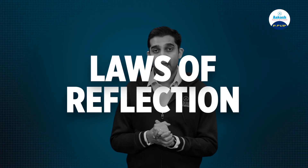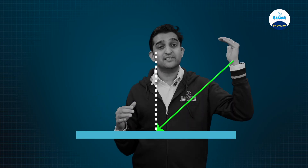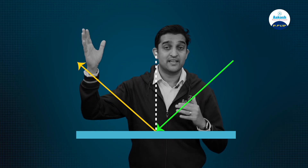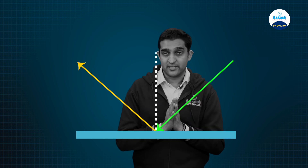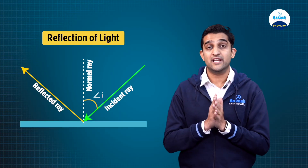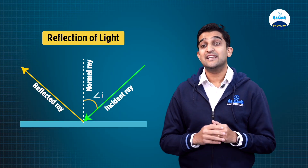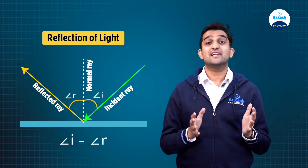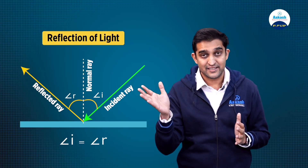The laws of reflection. Imagine a surface with a normal to it, and a ray of light coming in — this is called the incident ray. When an incident ray hits a surface, it reflects and goes back in the same medium. The law of reflection states that the angle of incidence, which is the angle between the incident ray and the normal, is equal to the angle of reflection, which is the angle between the reflected ray and the normal.